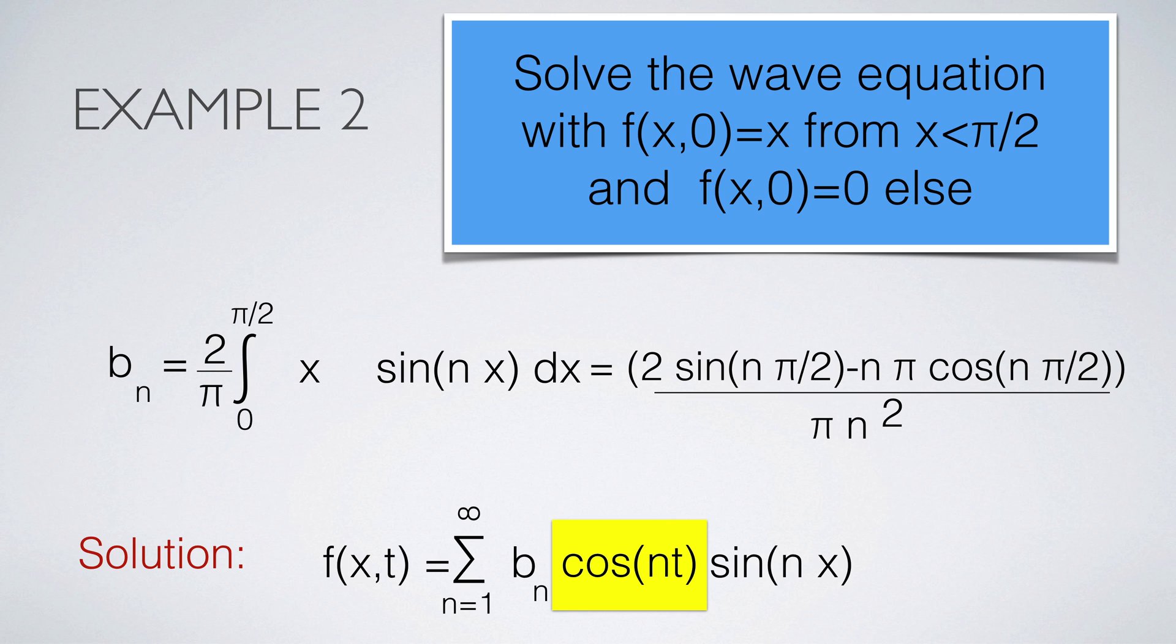In example 2, we solve the wave equation for which the initial string position is given by f(x) equal to x from 0 to π over 2 and 0 elsewhere. Again, the work reduces to the computation of the Fourier coefficients. Note that in this case we form an integral from 0 to π over 2 and ignore the integration from π over 2 to π since the function vanishes there.